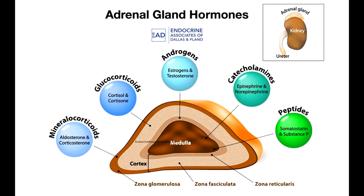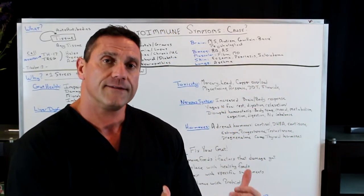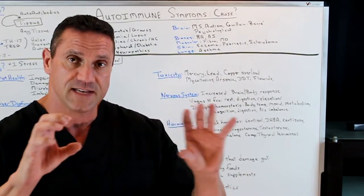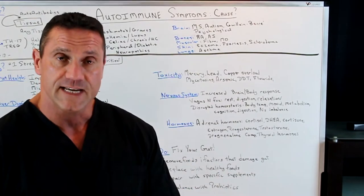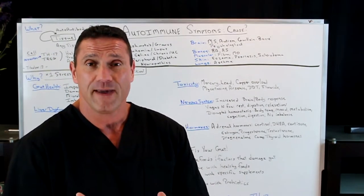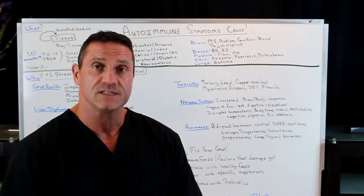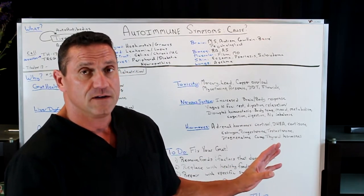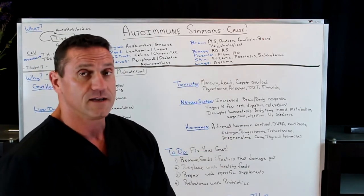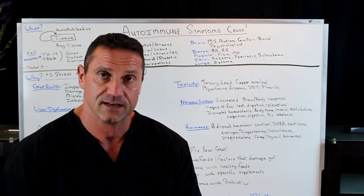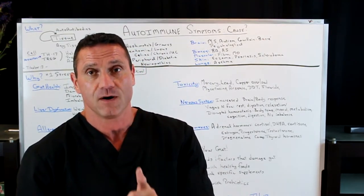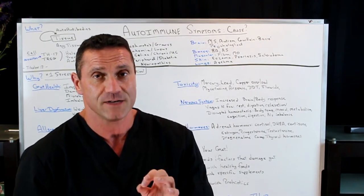Hormones — this is big. When you disrupt the hormonal balance and your autoimmune condition with all of the above, the adrenal hormones — which are part of your body's stabilizer — are going to be thrown off balance. Cortisol, DHEA, which creates other hormones: cortisone, estrogen, progesterone, testosterone. I've treated many females and males who have had autoimmune conditions, and the reason why they're flaring up is because of the adrenals — they have a dysregulation, not producing enough testosterone, progesterone, and other hormones. Pregnenolone, comprehensive thyroid hormones — I always recommend a comprehensive thyroid panel because most hypothyroid conditions are autoimmune — they're Hashimoto's.